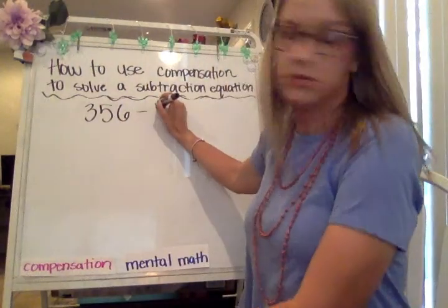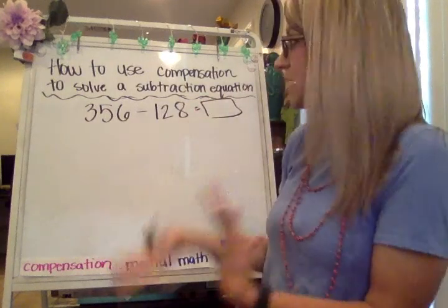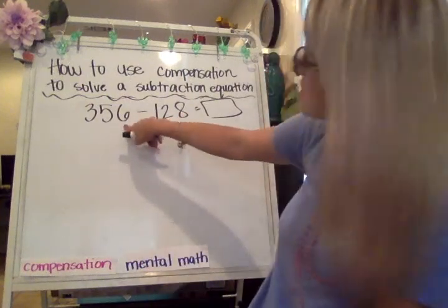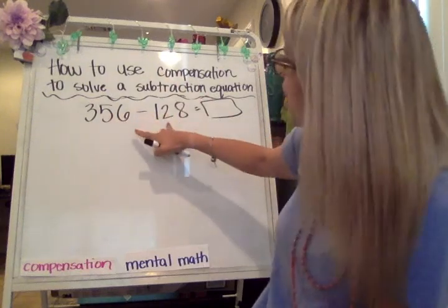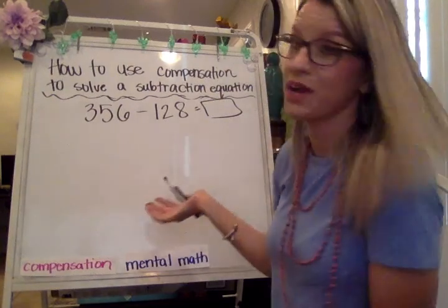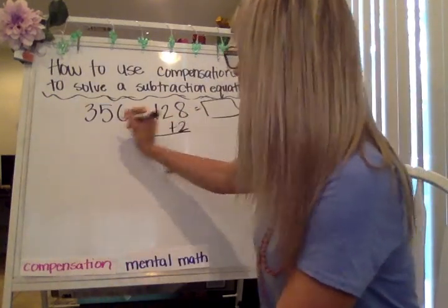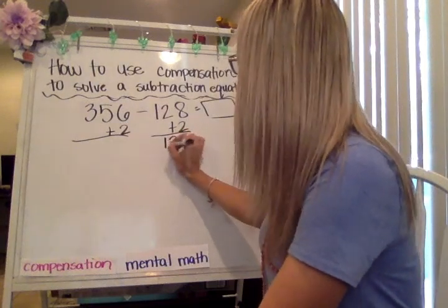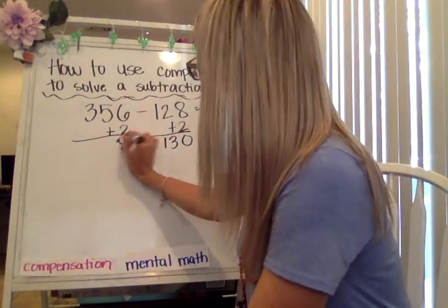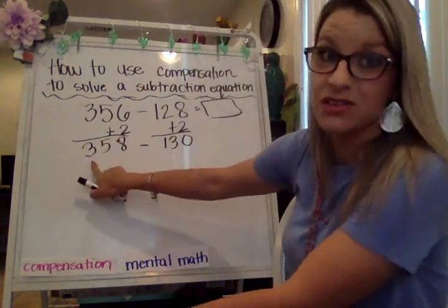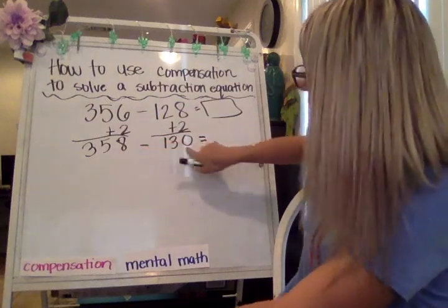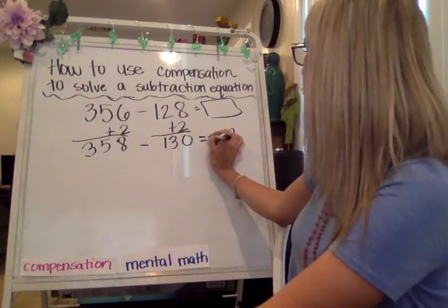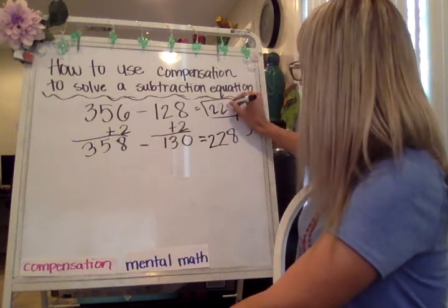356 minus 128. Check out what you've got going on — is compensation the best way to solve this? We've got six and an eight, so we are going to have to do regrouping. I only need to worry about adding to the ones place. I'm going to add two to the ones place because two partners with eight to get to the next 10 — they're compatible numbers. This gives me 130, and we've got 358. So the new equation is 358 minus 130. Eight minus zero is eight, five tens minus three tens is two tens, and three hundreds minus one hundred is two hundreds. The difference is 228.